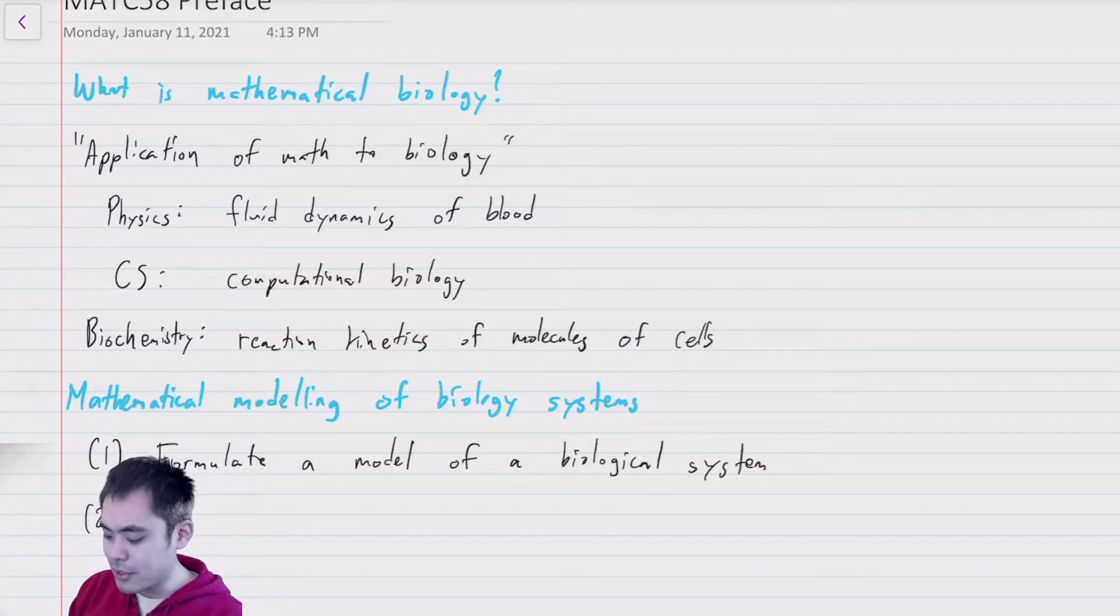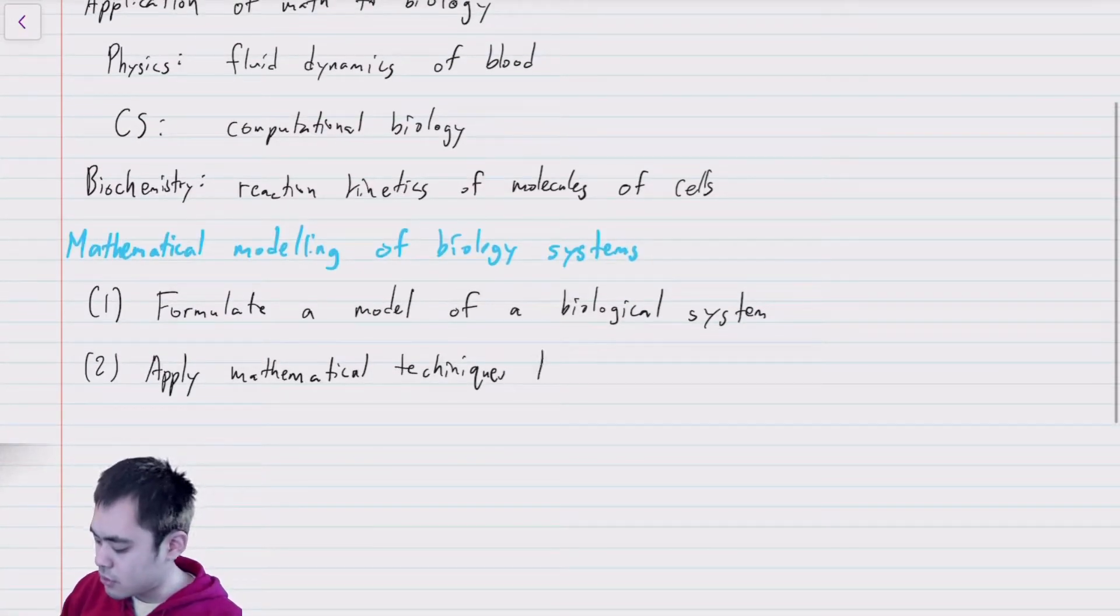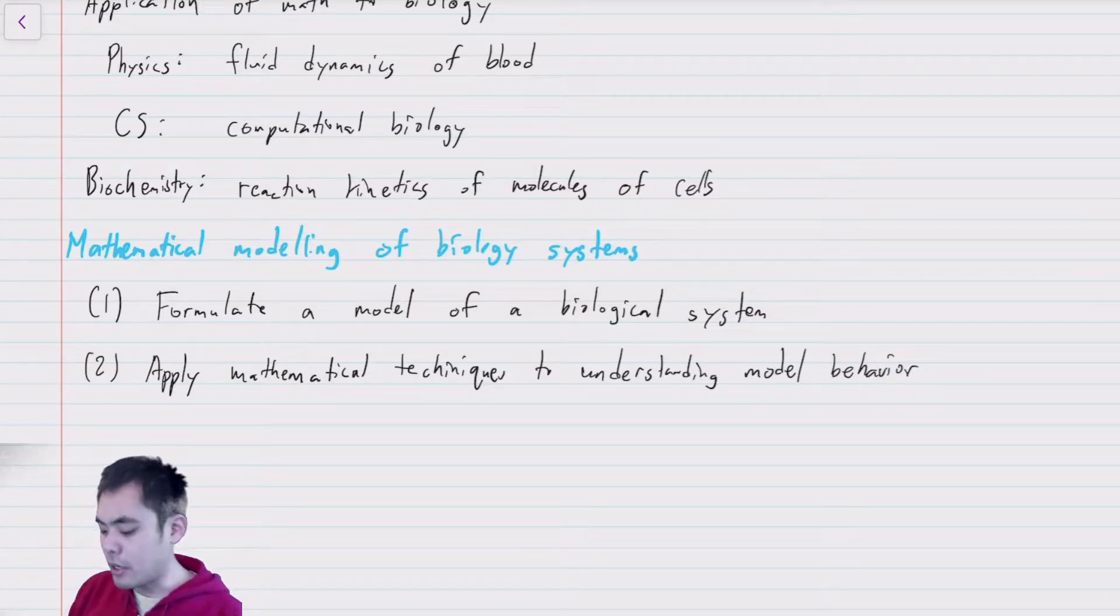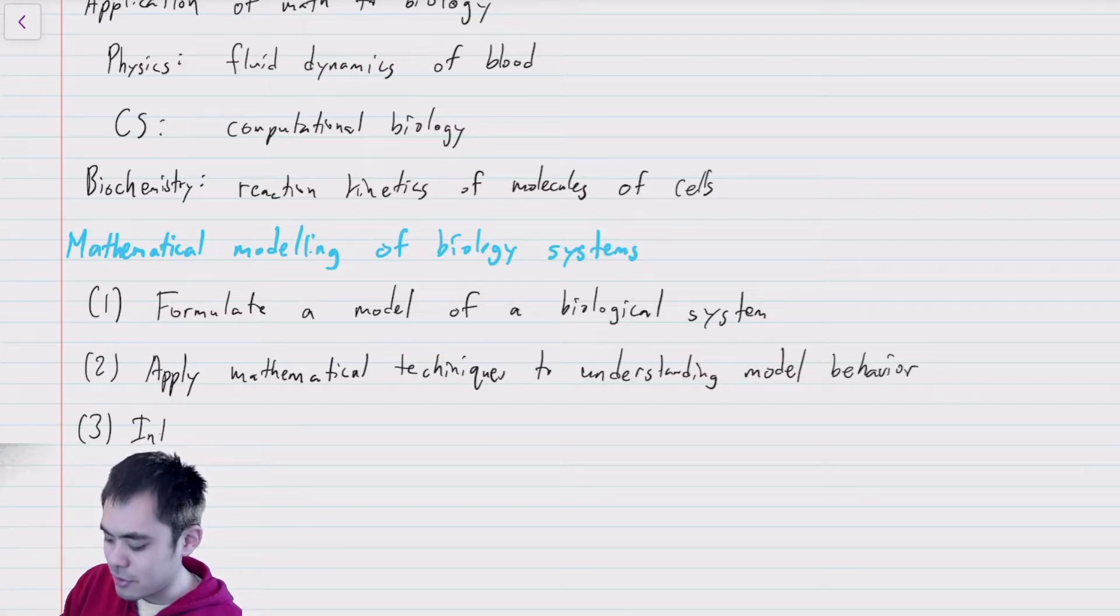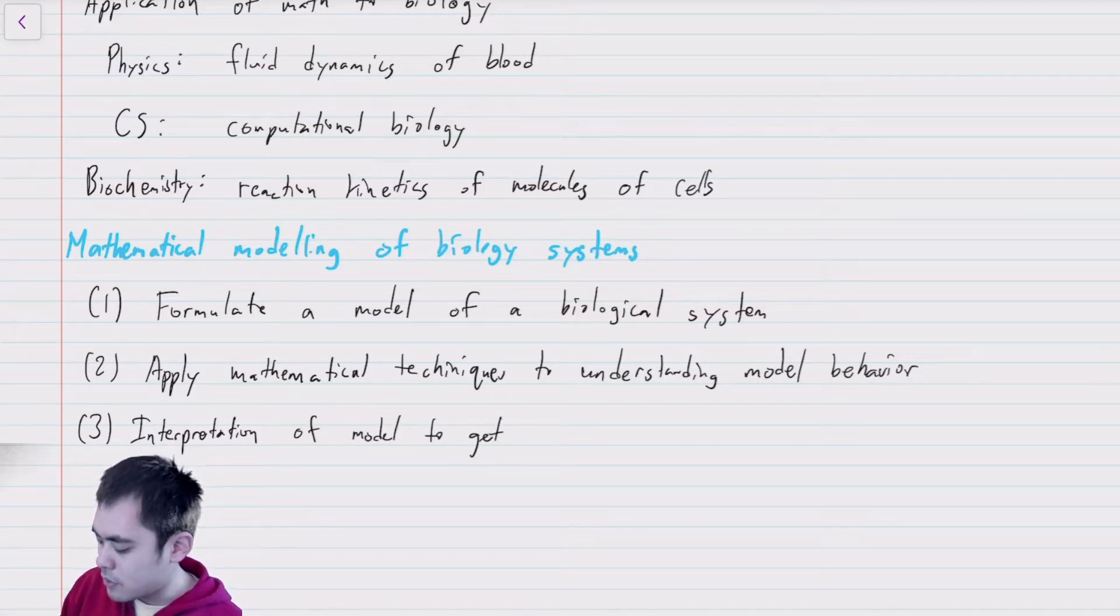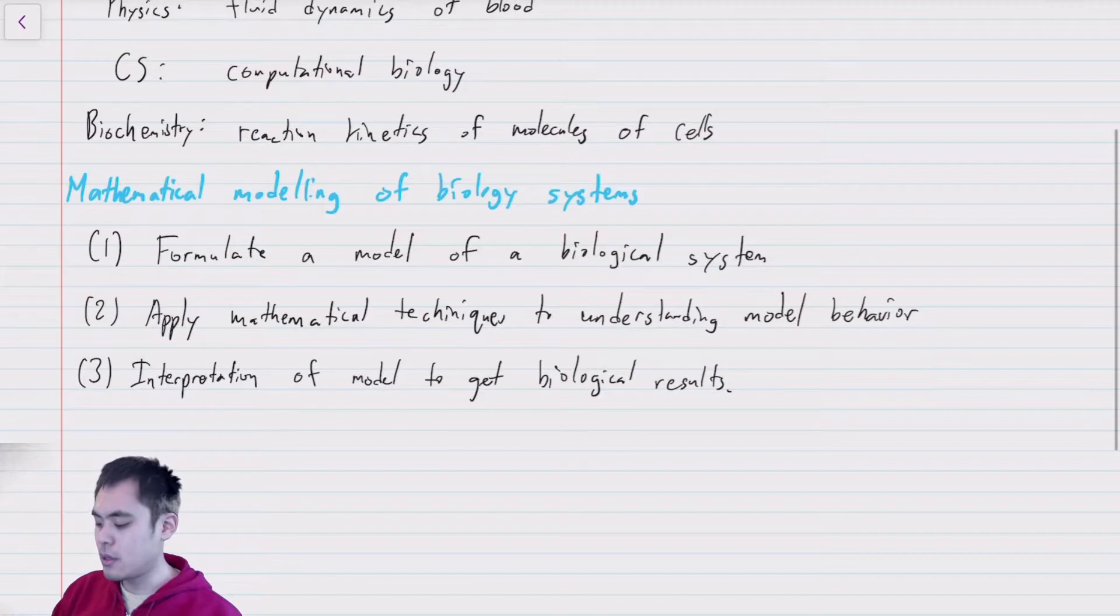Once we've formulated the mathematical model, we can apply mathematical techniques to understanding the behavior of the model. And then once we've done that, we understand how the model behaves. The hope is that we can interpret the behavior of model to get biological results. So the last step is interpretation where we're taking things back to the biology. Interpretation of model to get biological results.